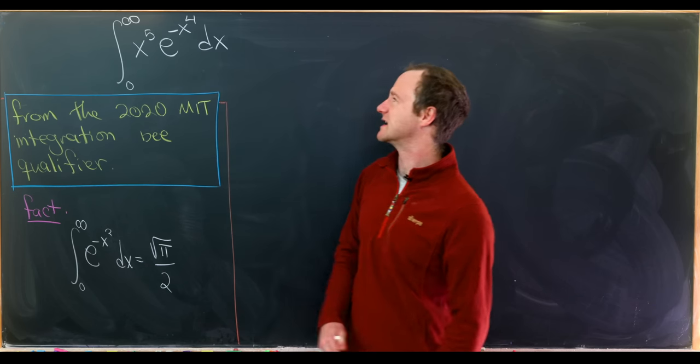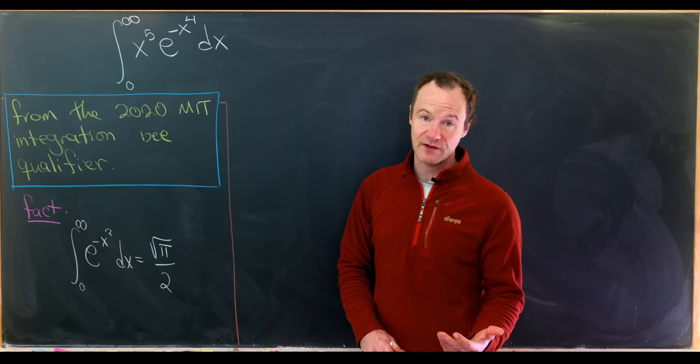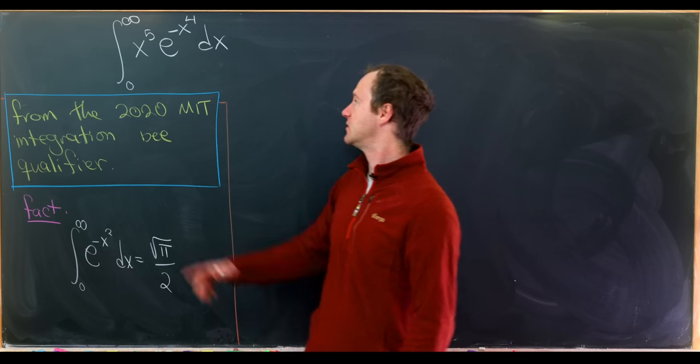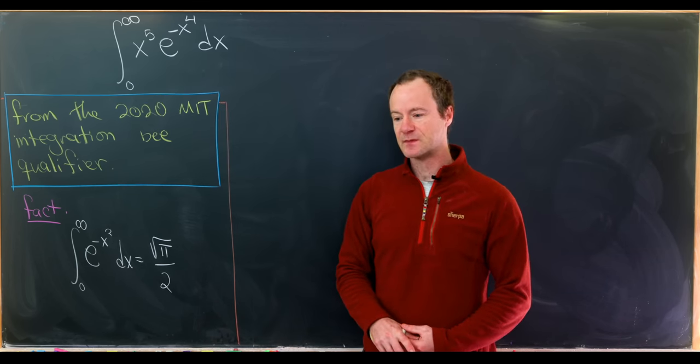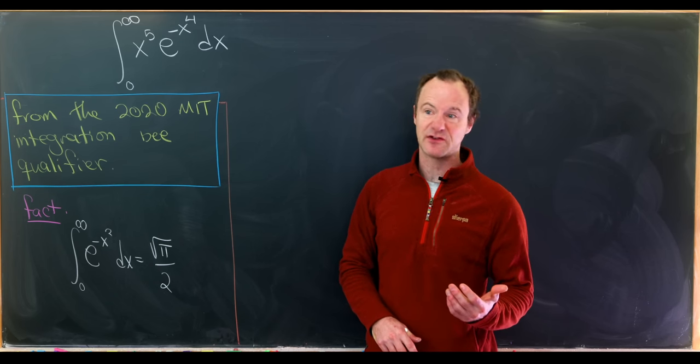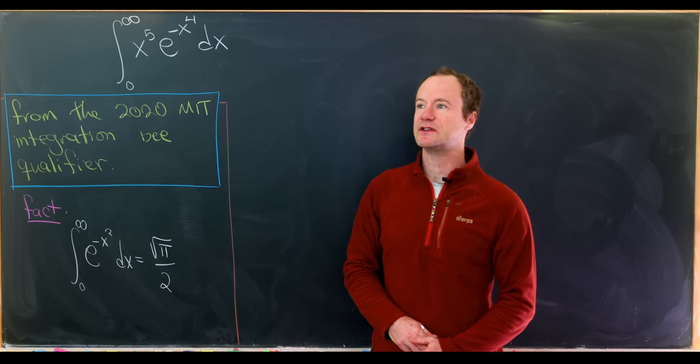Because your substitution would be like t equals x to the 4th. If you take the derivative there, you'll get dt has an x cubed term in it. Notice that eats up some of these but not all of these. And the most important thing is that you'll have a non-integral power on what's left over once you put it into the t variable.